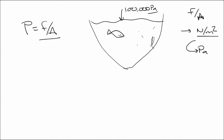Say we have atmospheric pressure of 100,000 pascal acting on the surface of a pond. If we take a point three meters under the surface, the pressure there is the atmospheric pressure plus the pressure generated by three meters of water above that point. This is true for every point at that same depth.